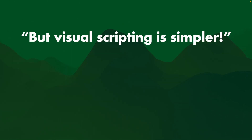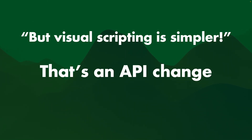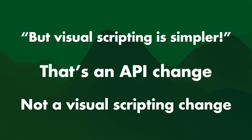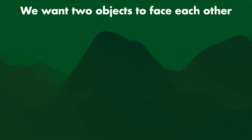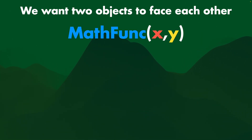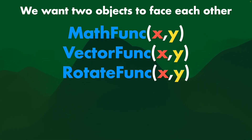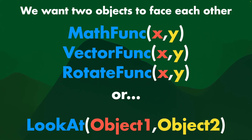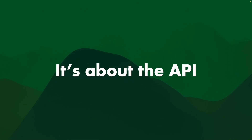Usually people say visual scripting is simpler — but that's just an ABI change, not a visual scripting change. For example, if we want two objects to face each other, we could use a math function, a vector function, and some kind of rotate function. Or you just make a look-at function, put the two objects in, and they look at each other. You make that function — it's about the API.